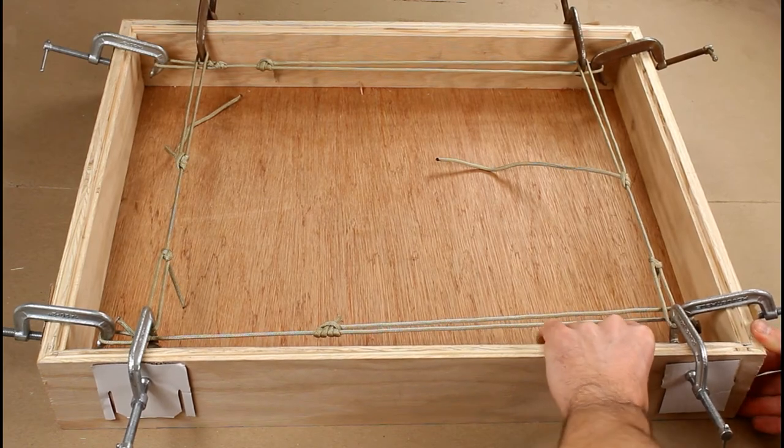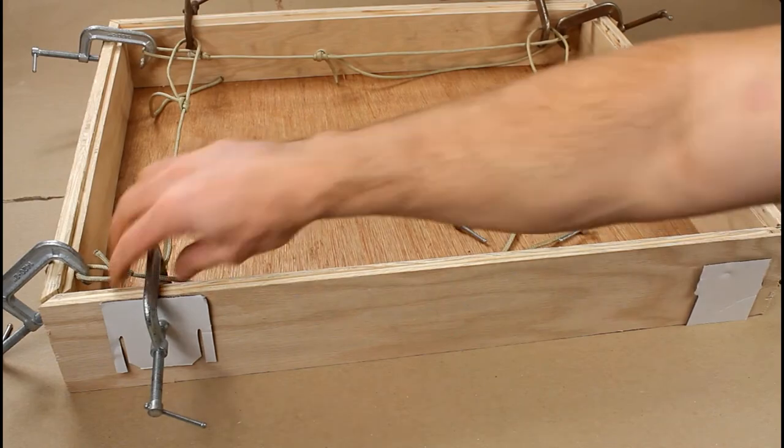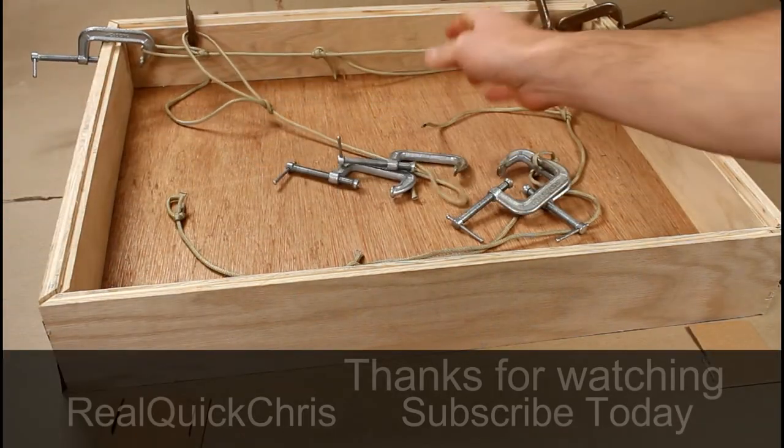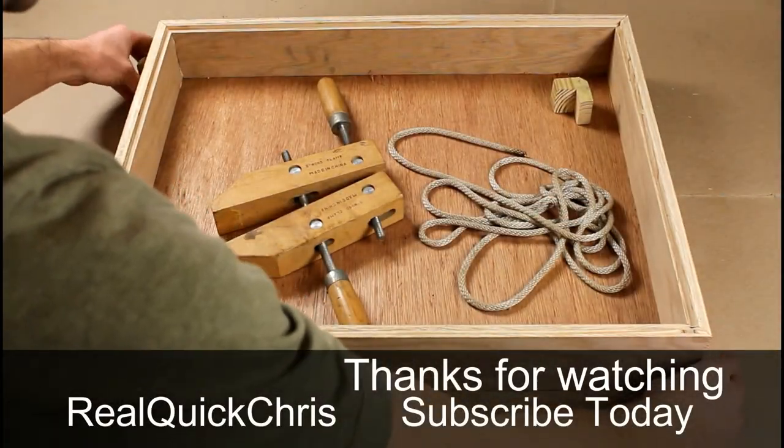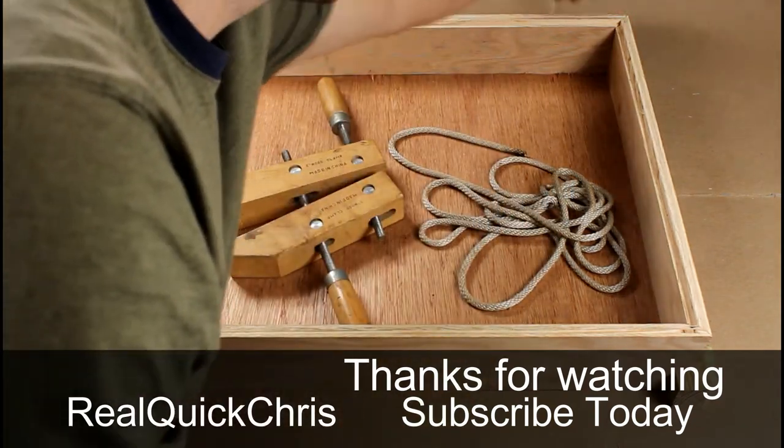After the glue has dried, disassembly is as simple as moving the Prusik knot in the opposite direction to loosen everything up. If you don't have this many C-clamps, there is one other method you can use with one single piece of rope and one clamp to clamp your box or frame together. Be sure to check out that video.